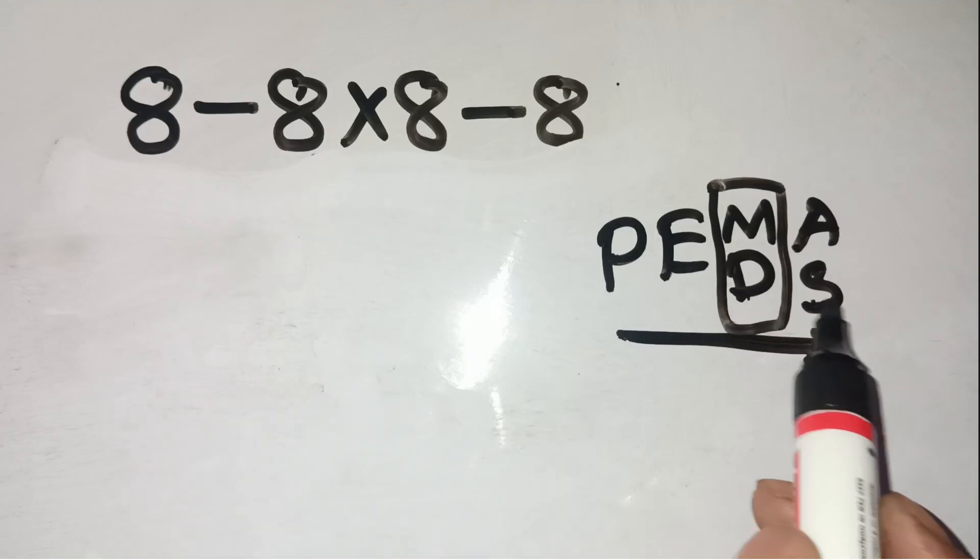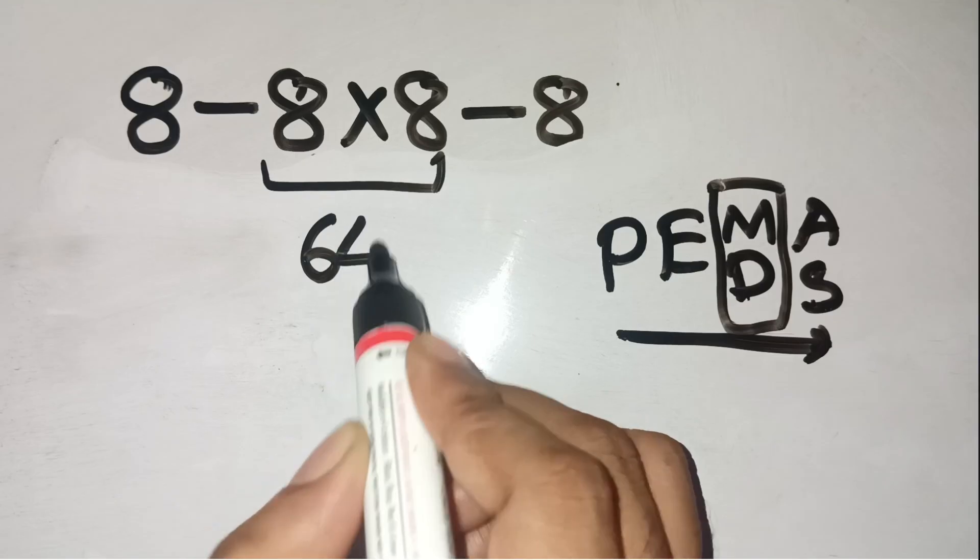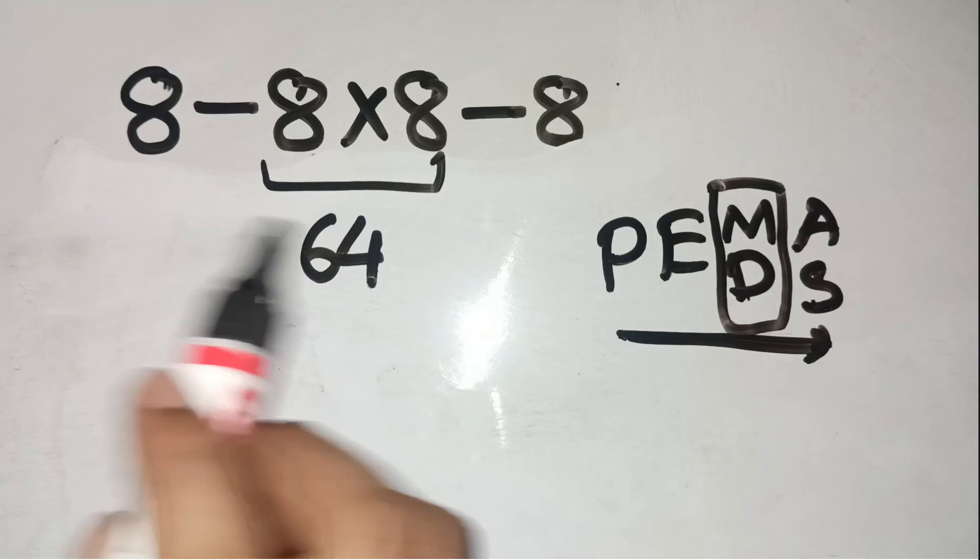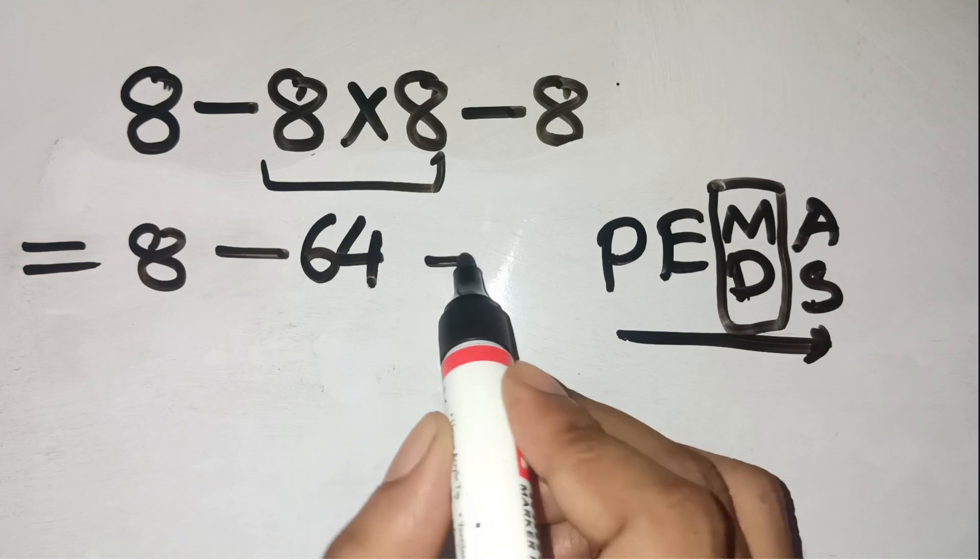That comes before any subtraction, so 8 times 8 equals 64. Now substitute that back into the expression, 8 minus 64 minus 8.